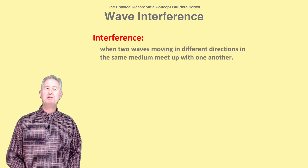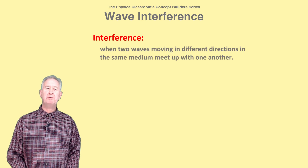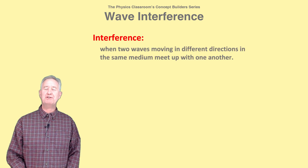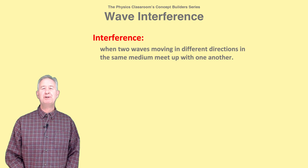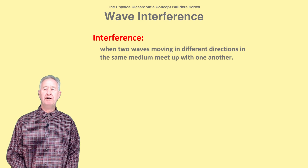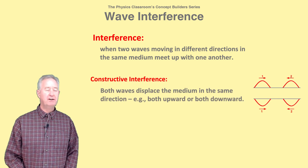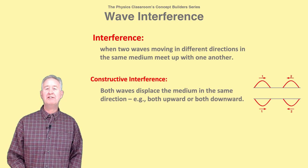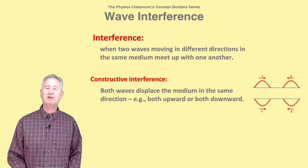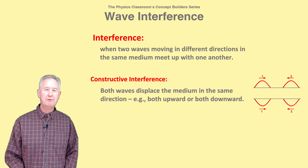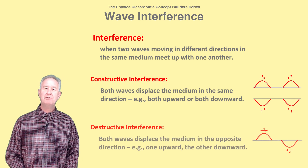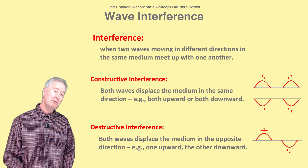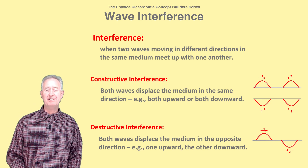Interference occurs when two pulses meet while traveling in opposite directions along the same medium. There are two types of interference. Constructive interference occurs when both pulses are displaced in the same direction — both upwards or both downwards. Destructive interference occurs when the displacements are in opposite directions.